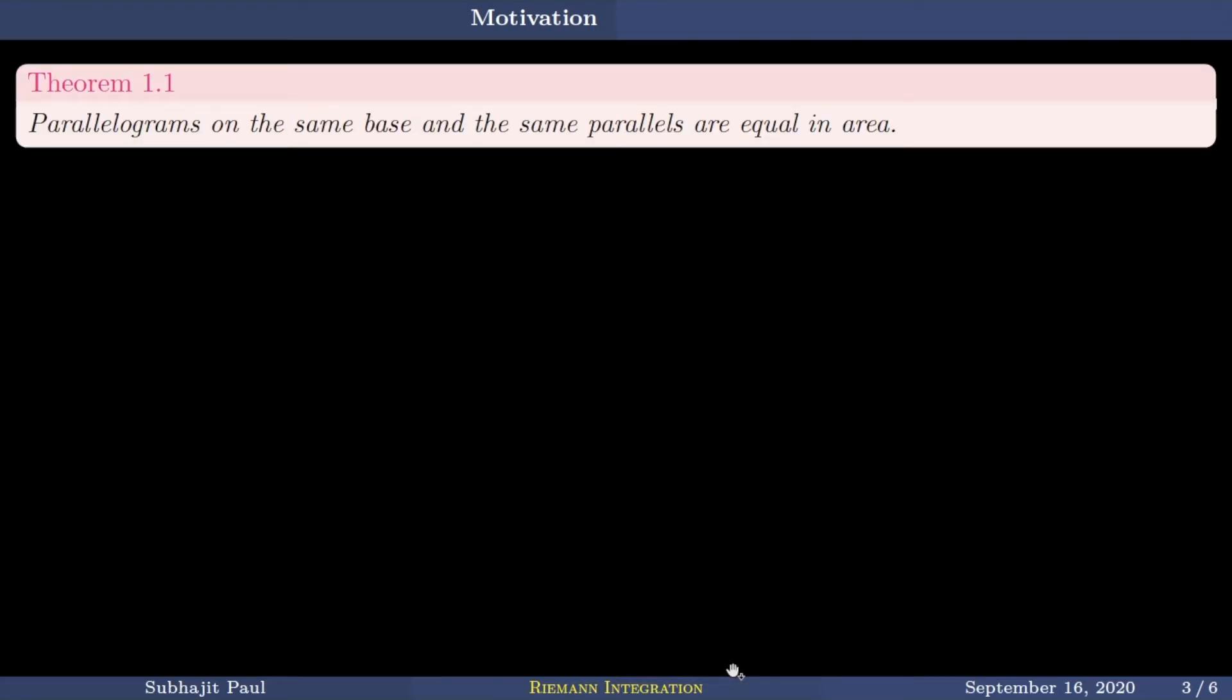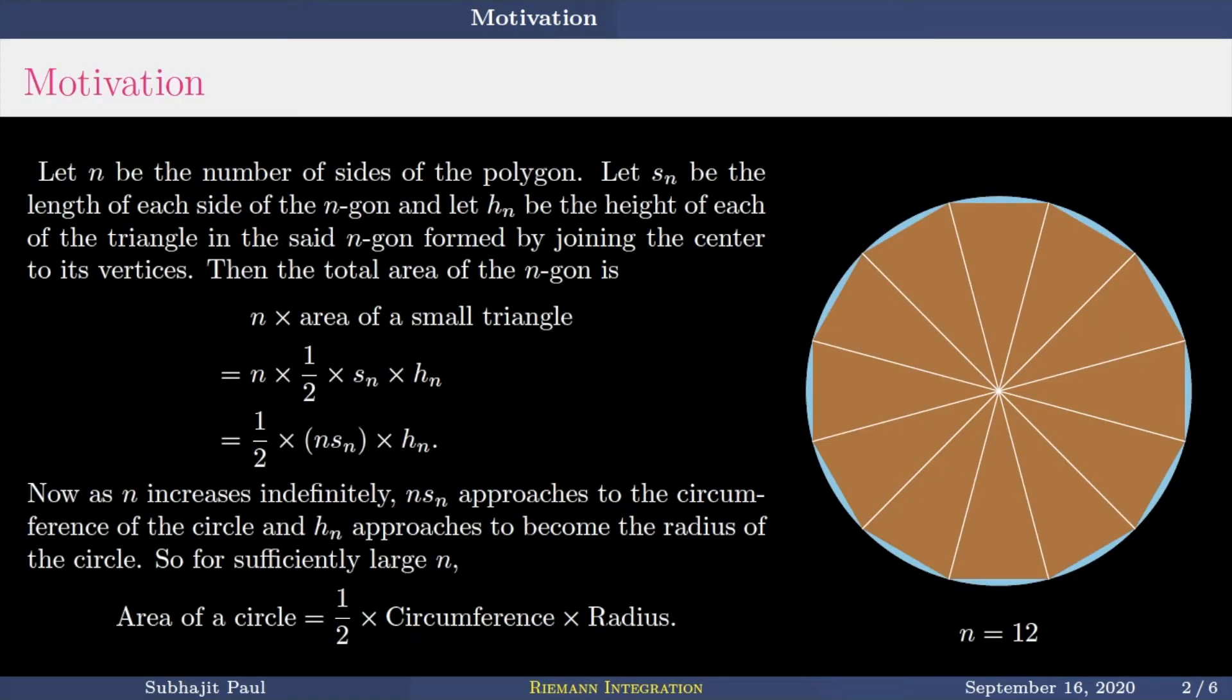Now, at this point, we must agree to something that the basic building block for area is a rectangle. We accept the fact that the area of a rectangle with length A and breadth B has area A times B. The proof of this fact will invoke some sophisticated set of postulates, which we intend not to do in this course. So we accept that the area of a rectangle with length A and breadth B is A times B, and we keep that as our building blocks.